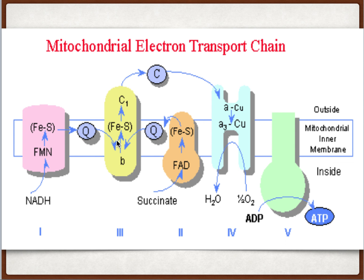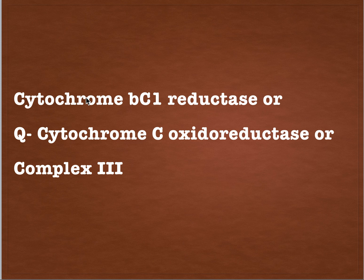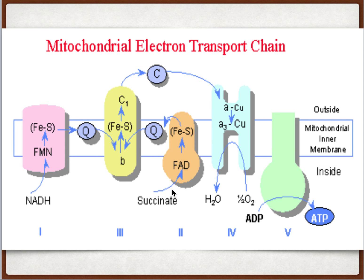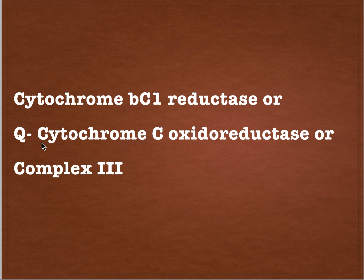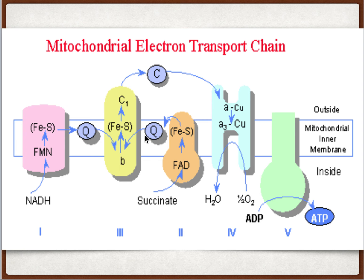Complex 3 is also called cytochrome BC1 reductase because it consists of cytochrome B and C1, which are accepting the electrons. It is also called Q-cytochrome C oxidoreductase because coenzyme Q is being oxidized, releasing electrons, and cytochrome C is reduced because it is accepting the electrons. The electrons pass from coenzyme Q via cytochrome B, iron-sulfur cluster, and cytochrome C1, and finally the electrons are accepted by cytochrome C, which is then reduced.